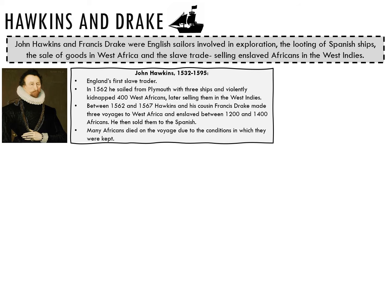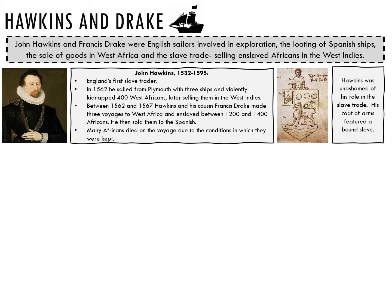In 1562, Hawkins sailed from Plymouth with three ships and violently kidnapped around 400 West Africans, later selling them as slaves in the West Indies. Between 1562 and 1567, Hawkins and his cousin Francis Drake made three voyages to West Africa and enslaved between 1,200 and 1,400 Africans. Hawkins then crossed the Atlantic and sold his cargo to the Spanish. Many Africans died on the voyage owing to the terrible conditions, and this period of the journey is known as the Middle Passage. Hawkins was unashamed of his role within the slave trade, and his coat of arms even featured a bound slave.